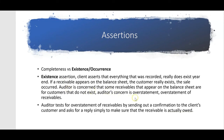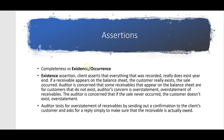With existence, the auditor is concerned that some receivables appearing on the balance sheet are for customers that do not exist. So the auditor's concern is overstatement — overstatement of receivables for existence and overstatement of sales for occurrence. With existence and occurrence, the auditor is concerned that if the sale never occurred, the customer doesn't exist. One way the auditor tests for overstatement of receivables is by sending out confirmations to client customers asking for a reply to verify the receivable is actually owed.